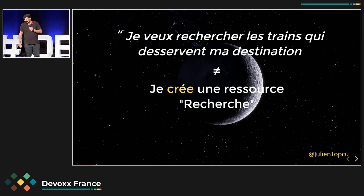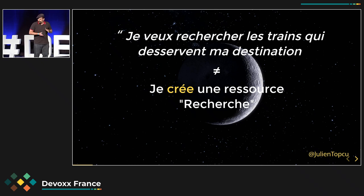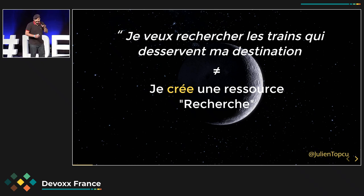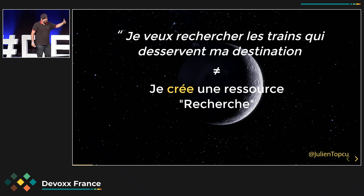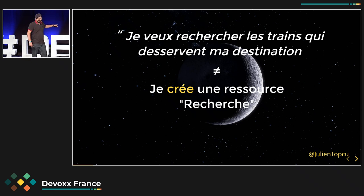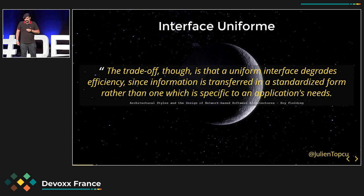Il faut aller chercher le métier. À cause de REST et ces quatre mots de vocabulaire, on a un problème d'impédance parce qu'on est limité dans ce qu'on peut exprimer. Ces phrases, même si elles sont équivalentes en REST, on voit qu'on perd du sens. Ce n'est pas exactement la même chose : « Je crée une ressource recherche » versus « je veux rechercher des trains qui desservent ma destination ». Pourtant la sémantique REST est là. Et ça, c'est dû à l'interface uniforme de REST.